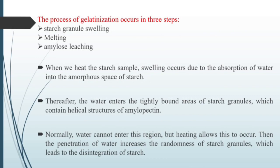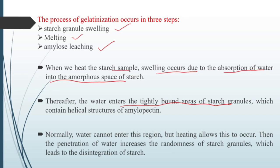The process of gelatinization occurs in three steps: starch granule swelling, melting, and amylose leaching. When we heat the starch sample, swelling occurs due to absorption of water into the amorphous space of starch. Thereafter, water enters the tightly bound crystalline areas of the starch granule, which contain the helical structure of amylopectin. Normally water cannot enter this region, but heating allows that. The penetration of water increases the randomness of starch granules, which leads to the disintegration of the starch.